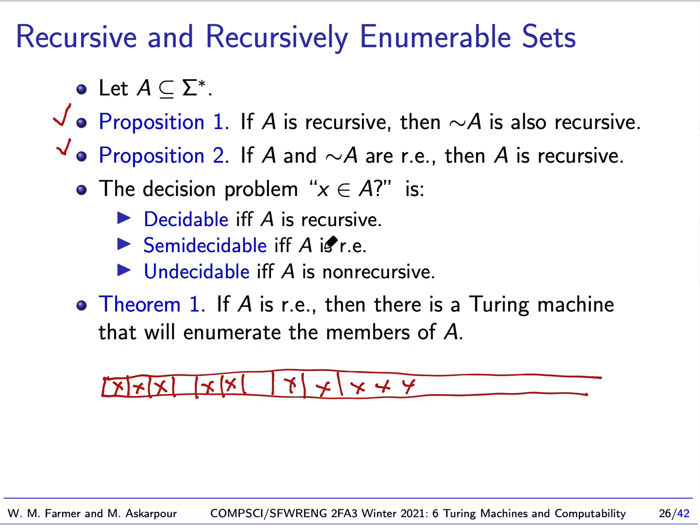Or it can be semi-decidable. That corresponds to A being recursively enumerable. Semi-decidable means we get a yes possibly, but we're not guaranteed to get a no. And undecidable corresponds to A being non-recursive. That means there is not a Turing machine that will give us either a yes or a no.